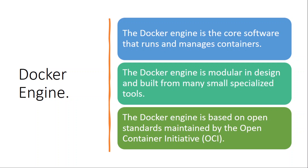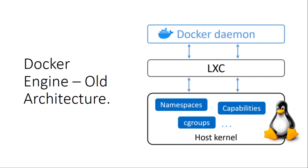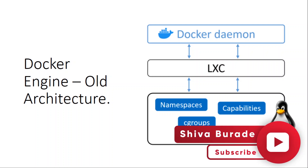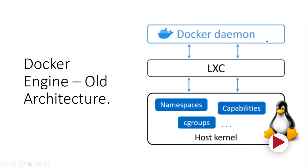Let us look at Docker Engine's architecture. This is the old Docker architecture, which has changed over time. According to this first architecture, Docker Engine is a monolithic binary — the Docker daemon is one big binary containing everything: the Docker client, Docker API, container runtimes, image builds, and much more.